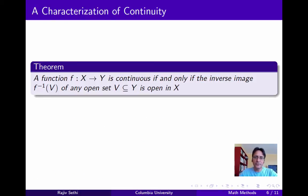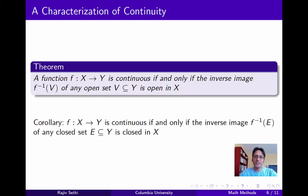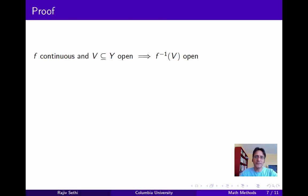Now let's consider an alternative way of looking at continuity based on the inverse images of open sets. Given our definition of continuity, we want to show that a function f is continuous if and only if the inverse image of every open set in the co-domain is open in the domain. It follows immediately that a function is continuous if and only if the inverse image of every closed set in the co-domain is closed in the domain, since a set is open if and only if its complement is closed. Let's prove this theorem.